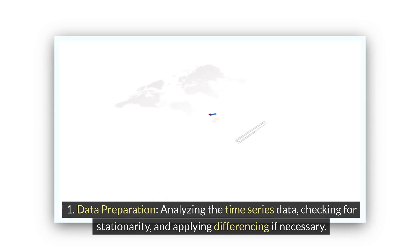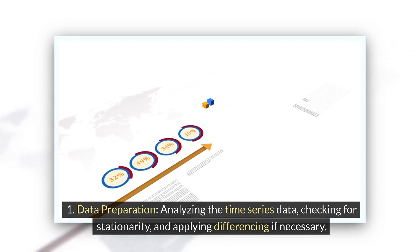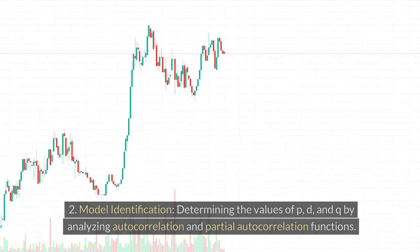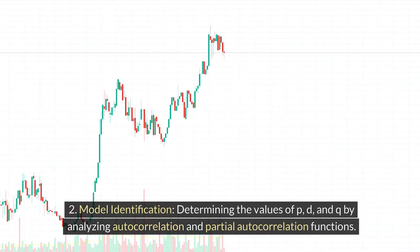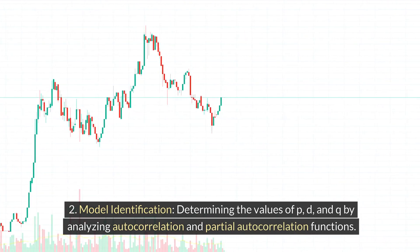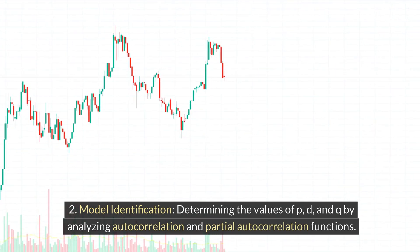The steps to build an ARIMA model typically include: 1. Data preparation: Analyzing the time series data, checking for stationarity, and applying differencing if necessary. 2. Model identification: Determining the values of P, D, and Q by analyzing autocorrelation and partial autocorrelation functions.